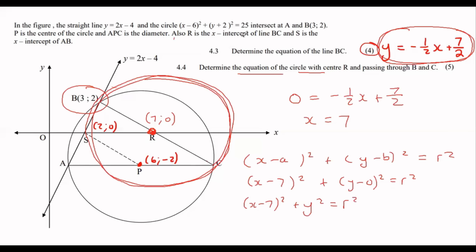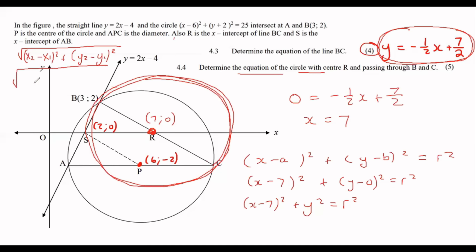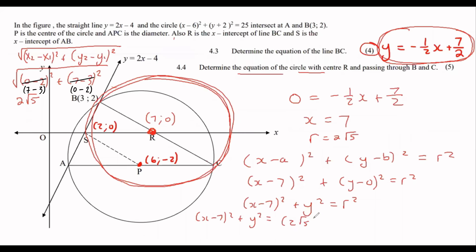Using the distance formula between R(7, 0) and B(3, 2): √[(0-2)² + (7-3)²] = 2√5. So (x - 7)² + y² = (2√5)². Squaring 2√5 gives the nice number 20, so the equation of the circle is (x - 7)² + y² = 20.